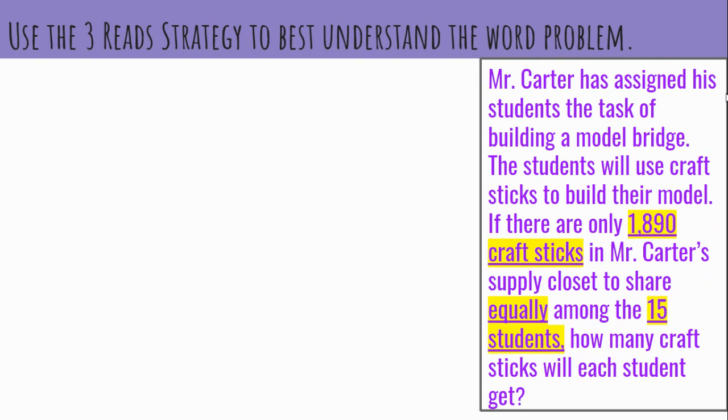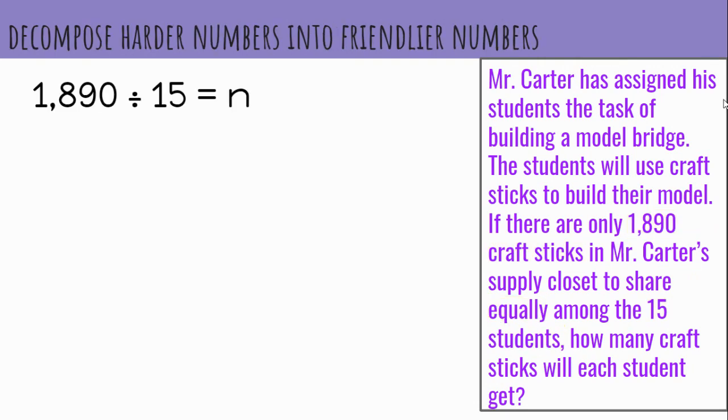The craft sticks need to be shared equally among the students. So I need to divide the sticks into 15 groups so that each student gets the same number of craft sticks. So my equation would be 1,890 divided by 15 equals n. n is the variable that represents the quotient or the number of sticks that each student will receive.